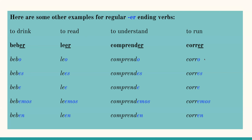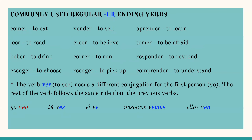Correr: corro, corres, corre, corremos, corren. So we always follow the same procedure — we're going to drop the ER and add the endings that we have been talking about.